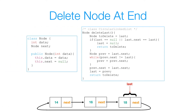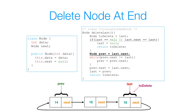Now let's move on to deleting a node at the end of a list. First I create a to-delete reference that initially references the last node. I check if last is null — meaning no nodes — or if last.next equals last — meaning only one node. If last is null there's nothing to delete; if last.next equals last I just set last to null and return to-delete. Otherwise, last is not null and last.next is not equal to last, so I move on.